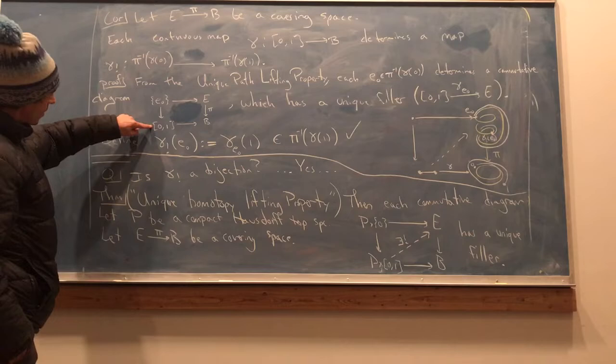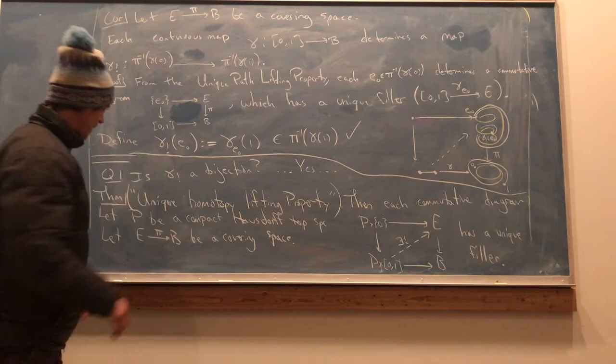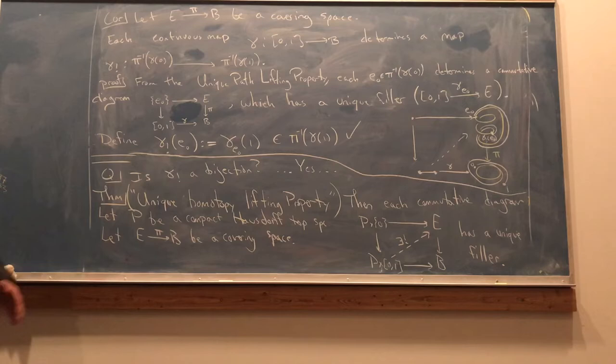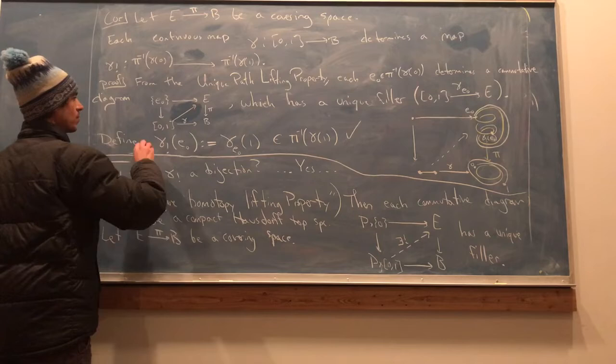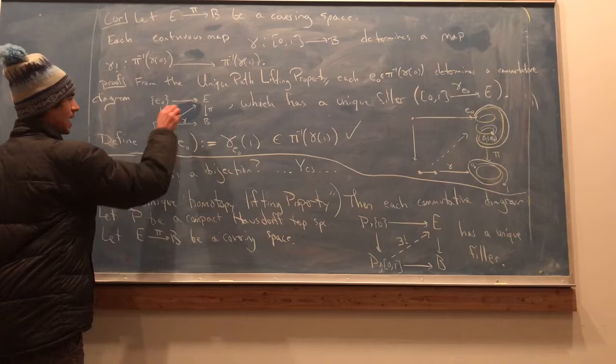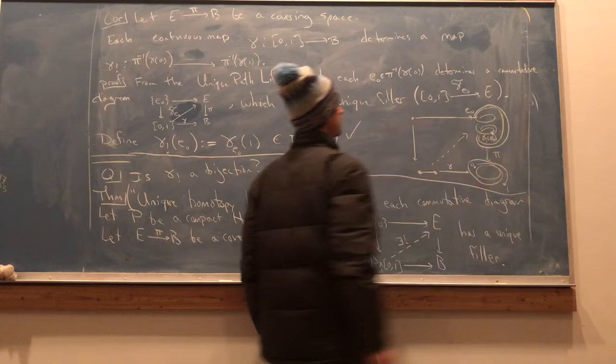Where this map goes to time zero, this map selects out little E zero. This is the given map, gamma. And by the unique path-lifting property, it has a unique filler. Call it gamma. It depends on E naught, so call it gamma sub E naught.